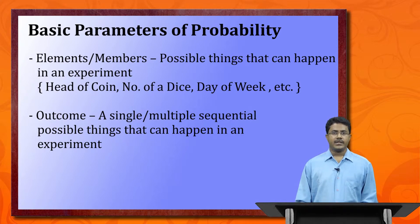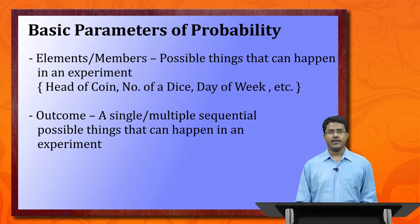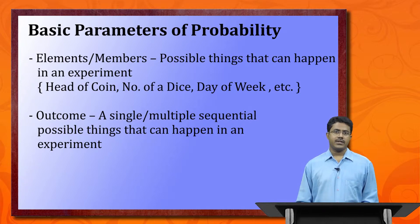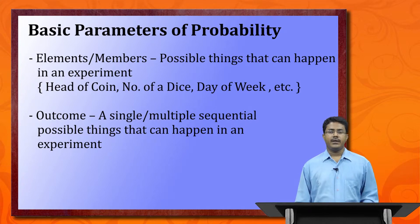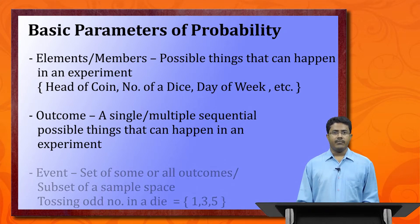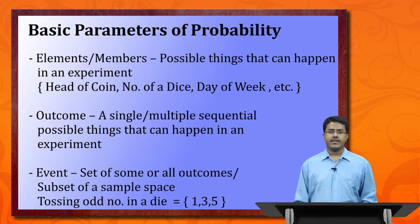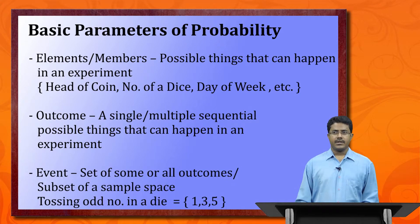Outcome is basically a single possible thing that can happen in an experiment, or multiple sequential possible things. For example, getting two heads consecutively, or getting even numbers when rolling a die — these are outcomes. An event is basically a set of some or all outcomes.